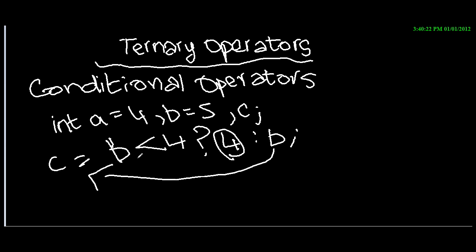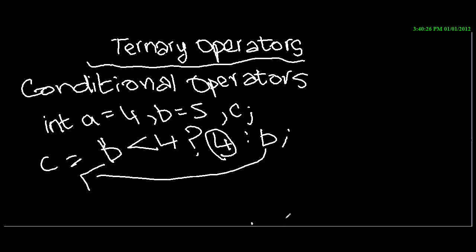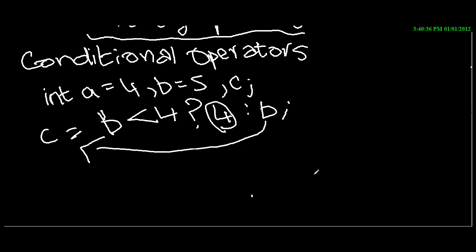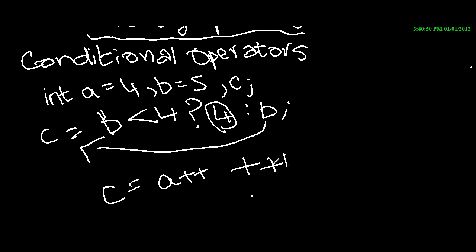Now I'm going to move into sums on postfix and prefix operators — I spoke about this last time so I'll go into it in a bit more detail. Using these values, forget about the ternary stuff for a moment. Let's say: c equals a postfix plus-plus, plus prefix plus-plus b, plus... Let me do this in a different color. So this is a postfix operator.